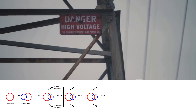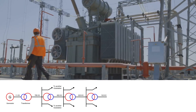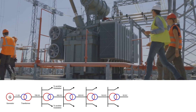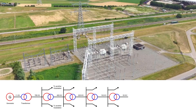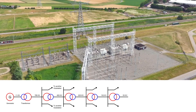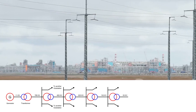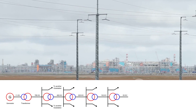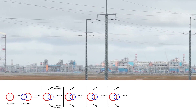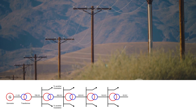After the 132 kV level, power enters the secondary transmission stage. Here the voltage is further stepped down, typically to 33 kV, and sent to different primary distribution substations closer to cities, towns, and industrial zones. This stage bridges the high-voltage transmission system and the medium-voltage distribution system. Though still technically part of the transmission network, secondary transmission ensures that voltage is now at a manageable level for regional distribution and commercial use.